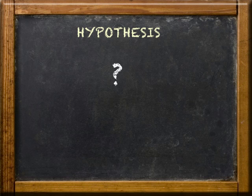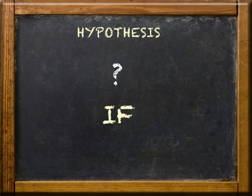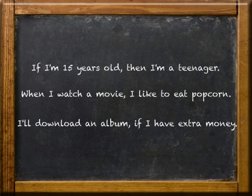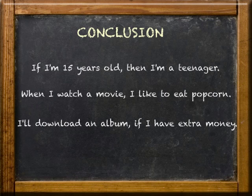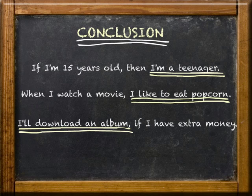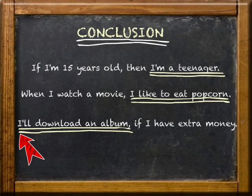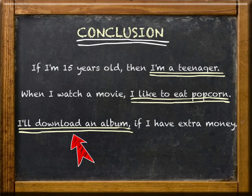But the idea of if is still there. So what's the hypothesis? It's the if part. Now let's look at the then part. It's called the conclusion, and that's because it's the part that happens after the hypothesis takes place. Let's underline the conclusion of each conditional statement with two lines. And while it's sometimes called the then part, the word then may or may not be there. And like the hypothesis, the conclusion might appear at the end of the statement, or it might be at the beginning.